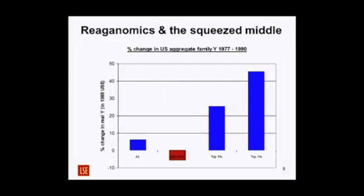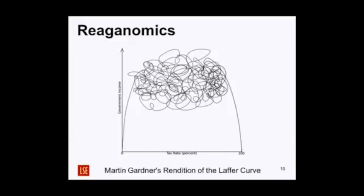The top 1% do very well; the top 5% do pretty well with 25% growth. The whole economy's macroeconomic statistics look relatively good — some 6% growth. But the bottom 50% — median income and below — see a significant drop in income. Trickle-down doesn't seem to work, and the Laffer curve doesn't seem to work. Reducing marginal rates of taxation doesn't seem to reduce deficits, government spending, or increase government revenue.